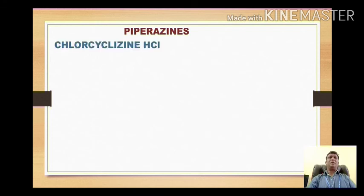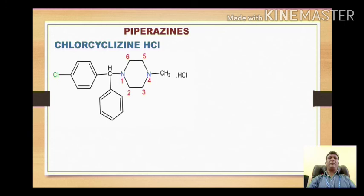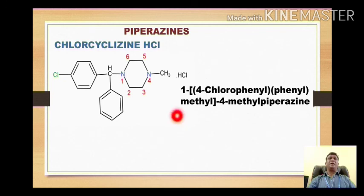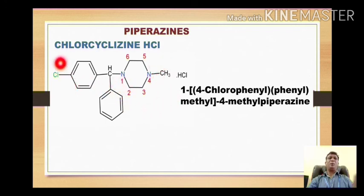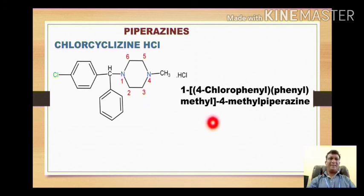Let's start with the piperazine class. The first drug included in the syllabus is chlorcyclizine hydrochloride. If we look at the structure of chlorcyclizine, we find the presence of this heterocyclic ring which is called piperazine. This nitrogen is given number one, two, three, and four. Its IUPAC name has the basic nucleus piperazine; on position number four we have a methyl, and on position number one we have a four-chlorophenyl and phenyl, both phenyls attached on methyl.